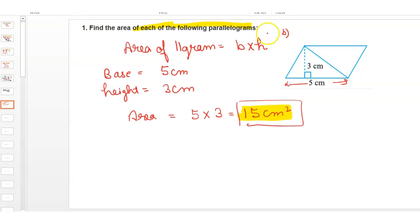We will consider this height, not that one, because this is a slant height, not the actual height. This is the actual height because it is perpendicular to the base.